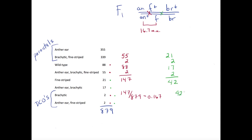42 divided by the total number of offspring observed, 879, equals 0.048. The distance between F and BR is 4.8 map units.